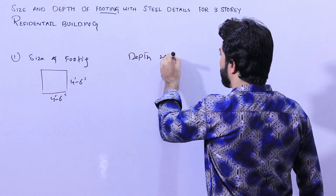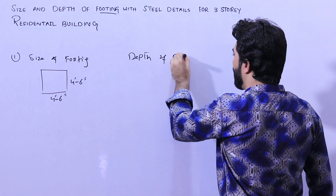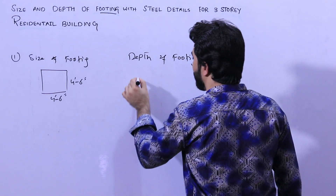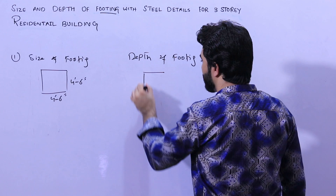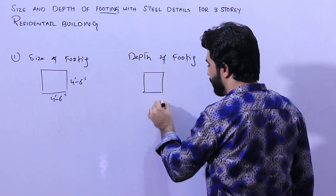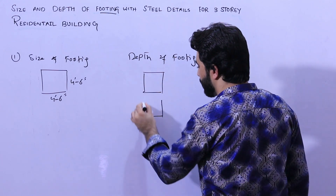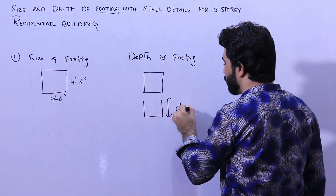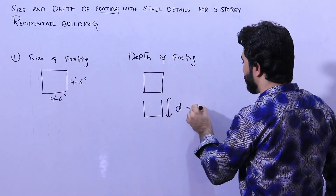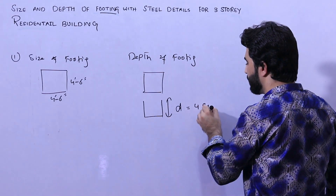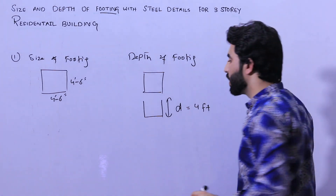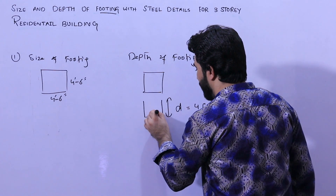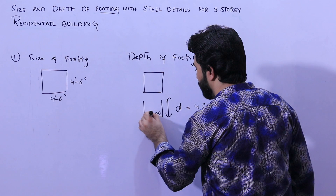Now let me guide you for the depth of footing. The depth of the footing, as you can see, should not be less than four feet. This is for a three-story building. Inside, you can see the steel reinforcement.